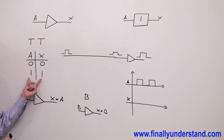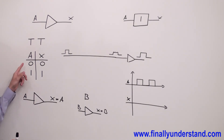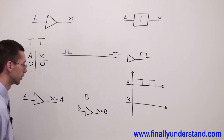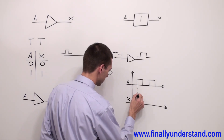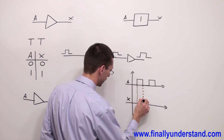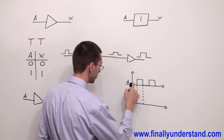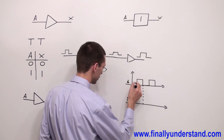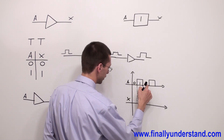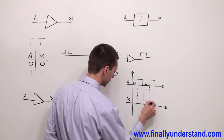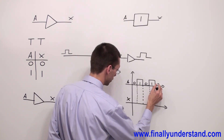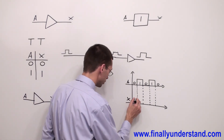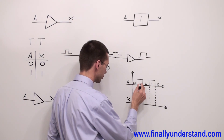You have to look at the truth table. Any time we have 0 at the input, the output is going to be also 0. 1 at the input, output is going to be 1. I have to first draw the dash line at every single change of my input signal. Any time you notice a transition from 0 to 1 or from 1 to 0, I have to draw the dash line.